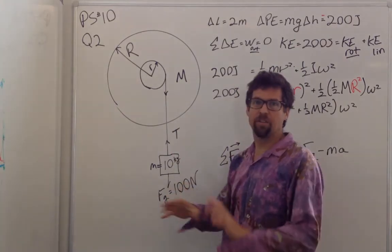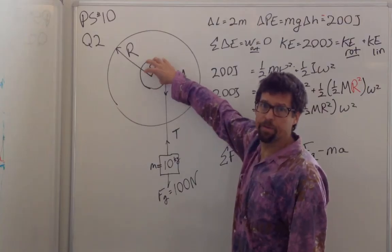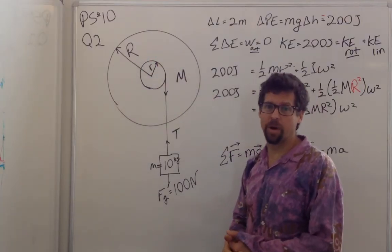We can find the acceleration is about 4.2 meters per second squared, or alpha is about 42 per second squared.